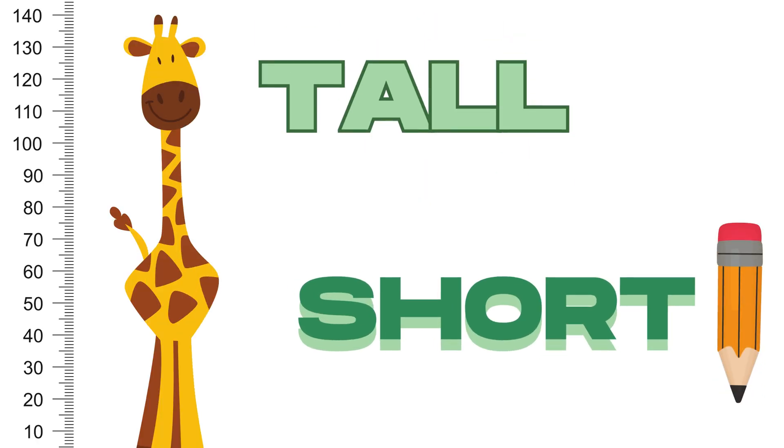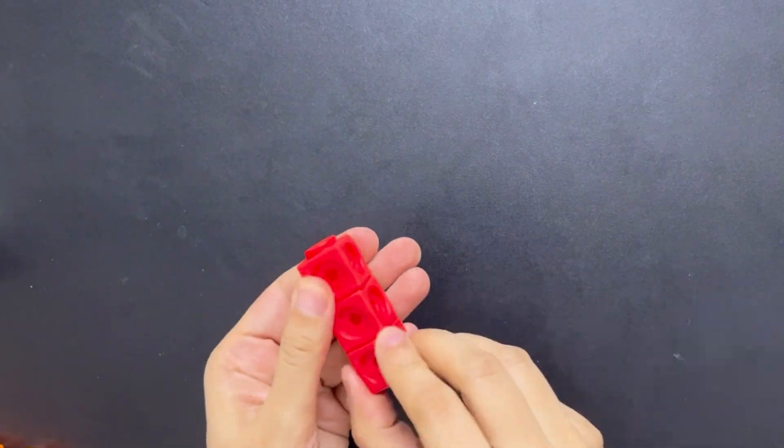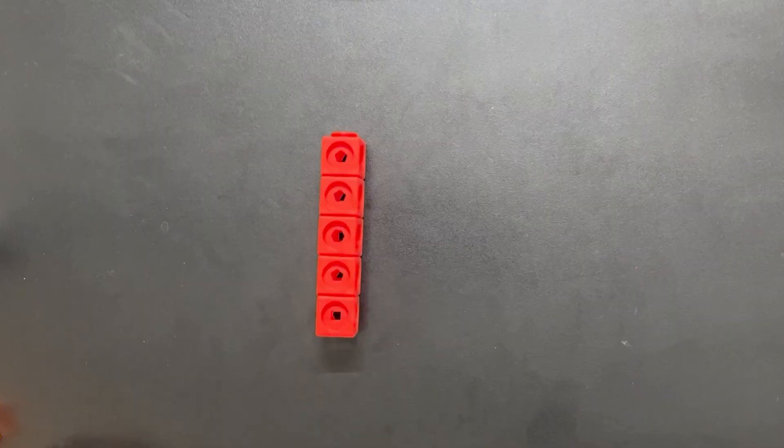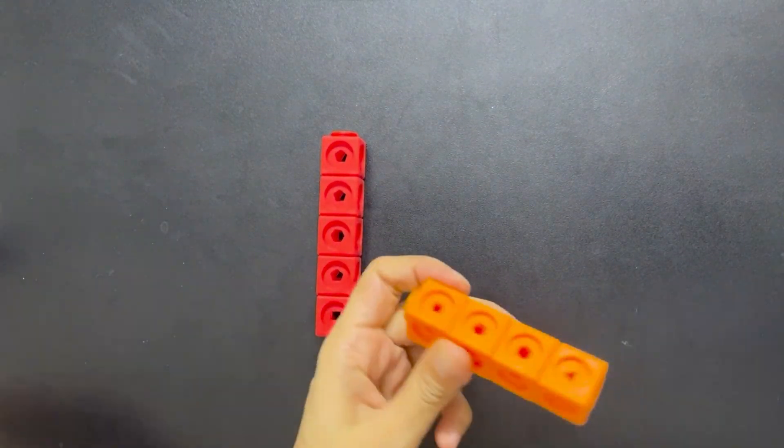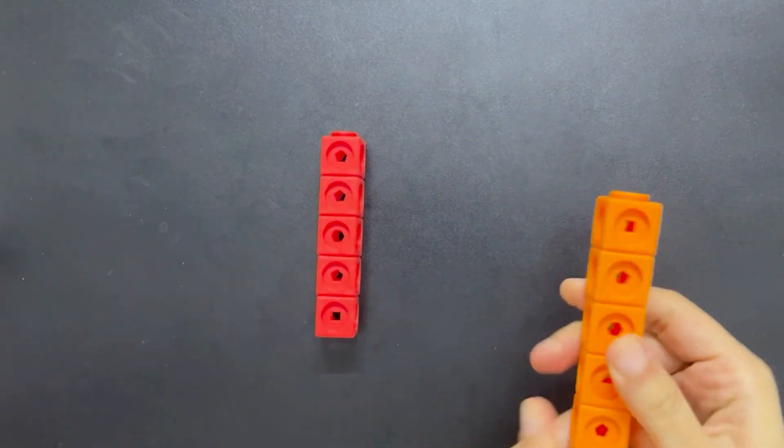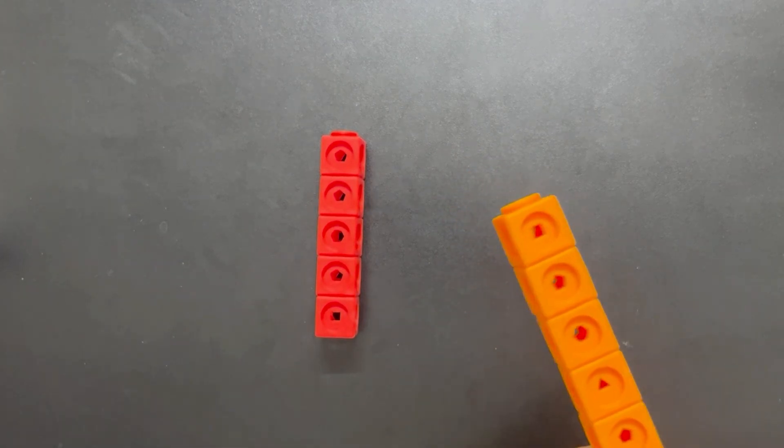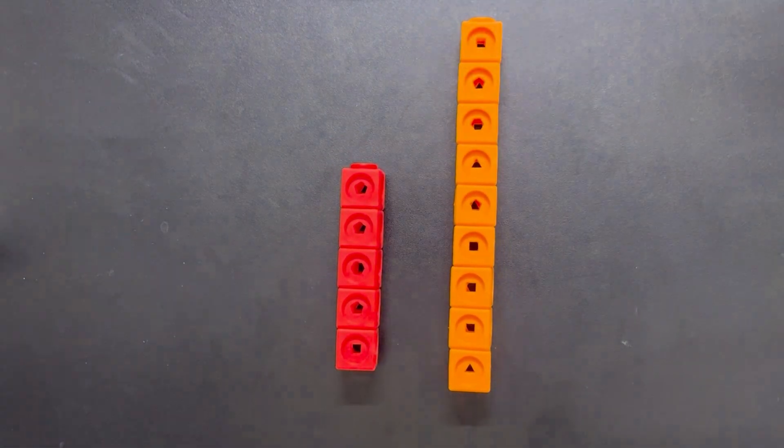Tall. Short. First, we're creating a short tower of five red colored number blocks. Now with the orange colored blocks, I'm making a tall tower to show the difference between short and tall. Can you guess how many orange blocks I'll use to make the tall tower? You're right. I've used nine blocks for the tall tower.